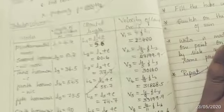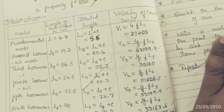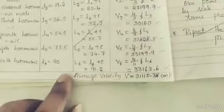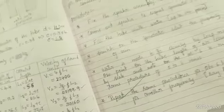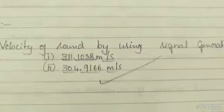I have taken mean of these values and I got 31,110.38 centimeter per second or it is 311.1 meter per second.